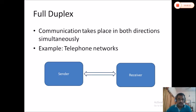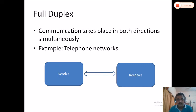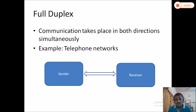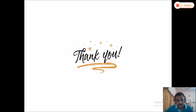The third mode is full duplex communication, where communication can take place in both directions simultaneously. An example is the telephone, where we can overlap communication in both directions at the same time. So in full duplex communication, both parties can communicate simultaneously, and an example is telephone networks.